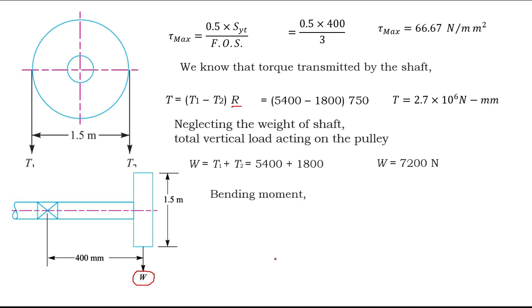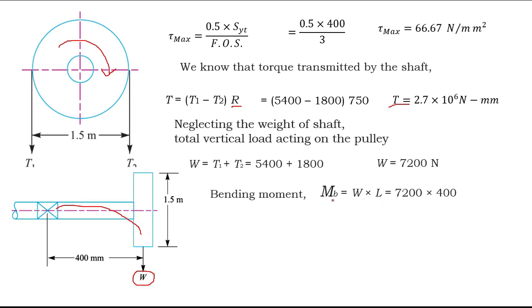The shaft has two types of load: one due to load W acting in the downward direction causing bending, and another which is the torque. So there is a combination of bending moment and torque. The bending moment is the force W into the perpendicular distance. As it is an overhanging wheel, bending moment equals W into L. The load W is 7200 N and the distance from the bearing to the pulley is 400 mm, giving us the bending moment.